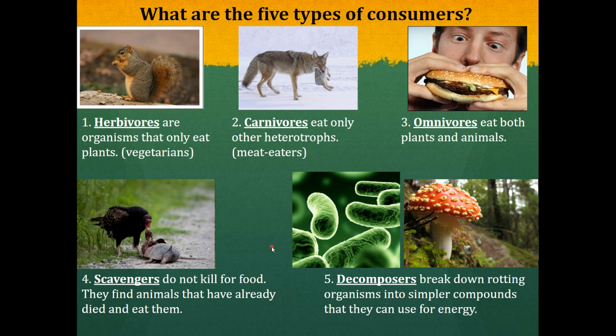The fifth type of consumer is decomposers. Decomposers break down rotting organisms for food. Two examples of decomposers are bacteria and fungi. Decomposers typically come along after the scavengers have picked off all the meat and fat, and then the bones and hard bits that are left behind get decomposed.